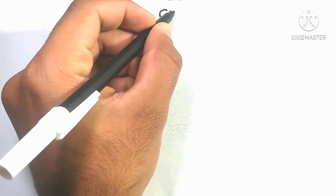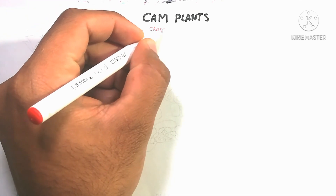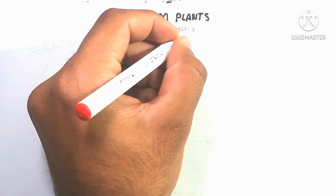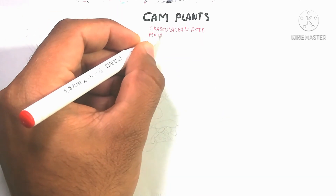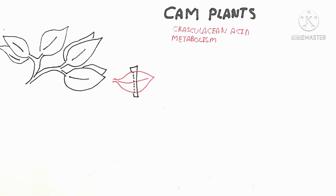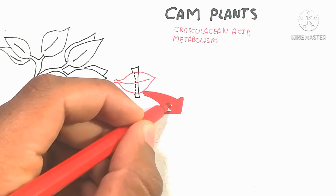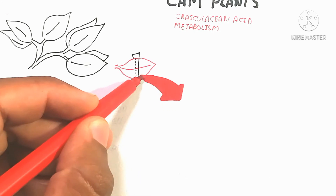CAM plants, also known as Crassulacean Acid Metabolism, produce a four-carbon containing compound known as an acid. During nighttime, stomata will be open. During daytime, stomata close to prevent water loss and photorespiration.